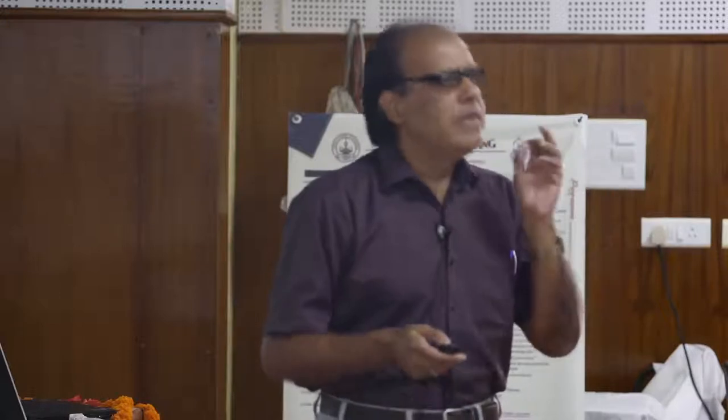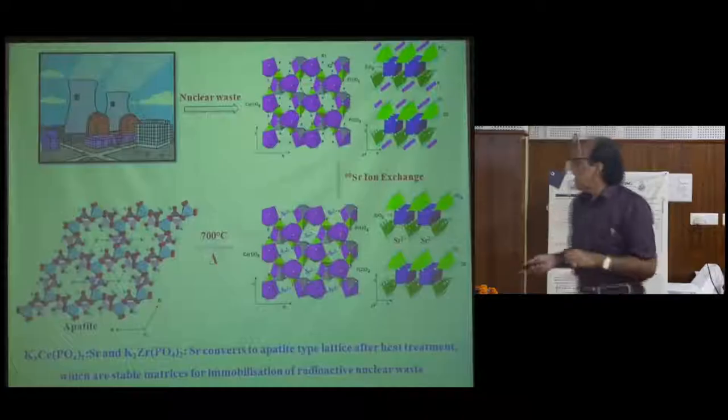Or if you want to immobilize, by slight heating both structures convert to apatite. Apatite structure is known to withstand geological conditions for millions of years. This provides complete immobilization of radioactive ions in the lattice — it is extremely difficult to leach out radioactive ions from apatite or zircon-type lattices.